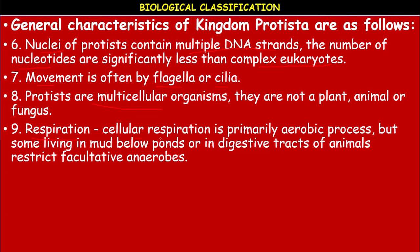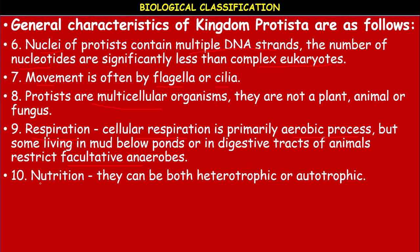Respiration in Protista is primarily an aerobic process — it takes place in the presence of oxygen. But some Protista living in marshy soils, mud below ponds, or in the digestive tracts of animals are facultative anaerobes, meaning they can survive in the presence or absence of oxygen. For nutrition, they can be both heterotrophic or autotrophic.